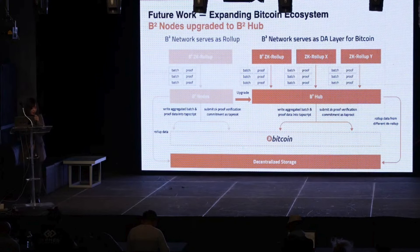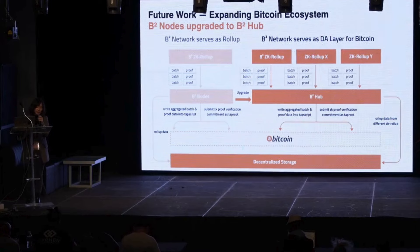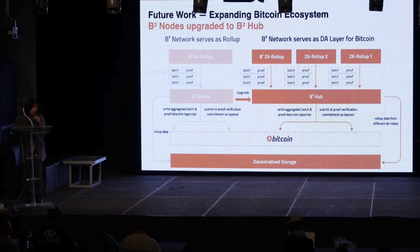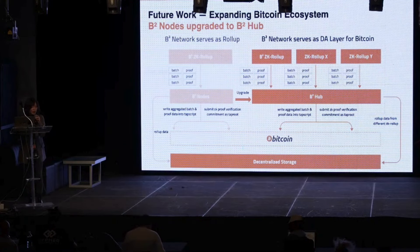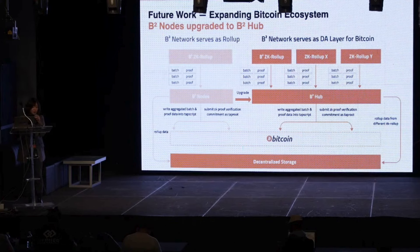The launch of B-squared Hub also addresses a potential network congestion problem caused by different Layer 2s writing data to Bitcoin — something we have already witnessed in Ethereum. As the Bitcoin ecosystem evolves, it will inevitably face similar issues, and considering the throughput and capacity limitations of Bitcoin, these issues could be even more severe. B-squared Hub can aggregate data and proofs from any connected rollups and submit them to Bitcoin, meaning that regardless of how many rollups are connected, the number and size of transactions submitted to Bitcoin will remain constant — resolving potential network congestion caused by numerous rollups in the future.